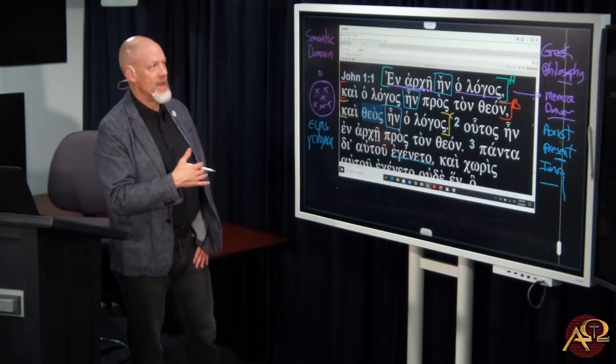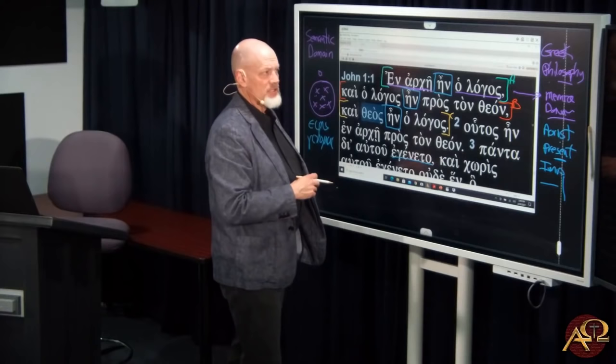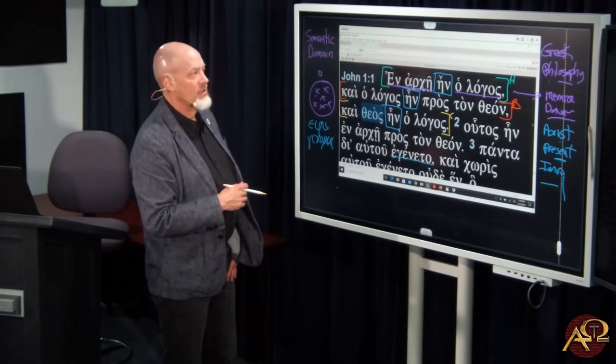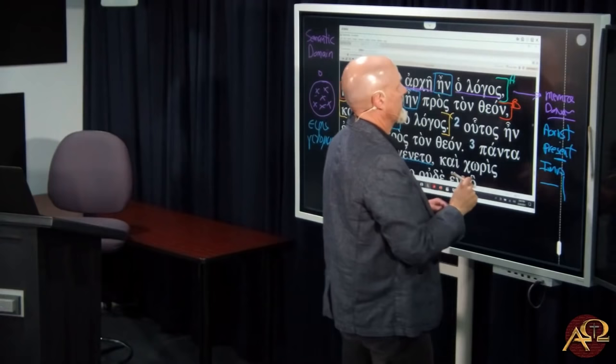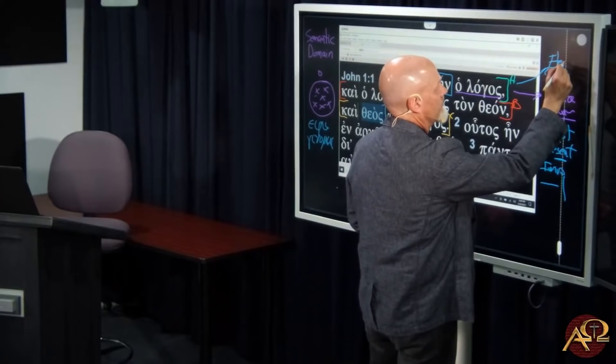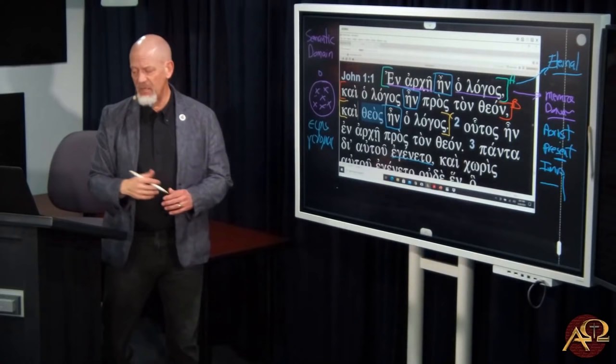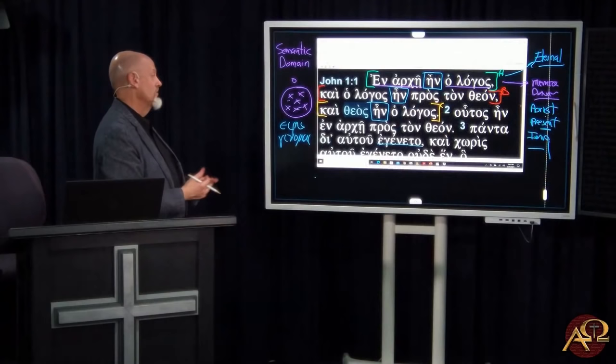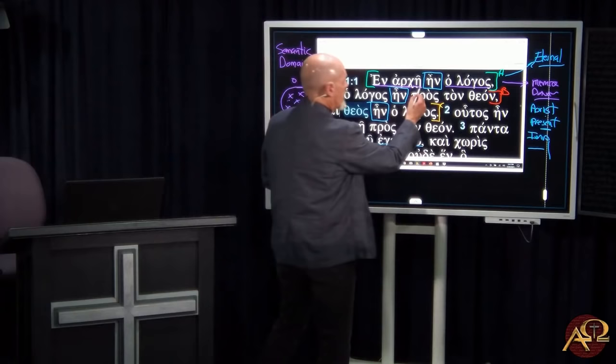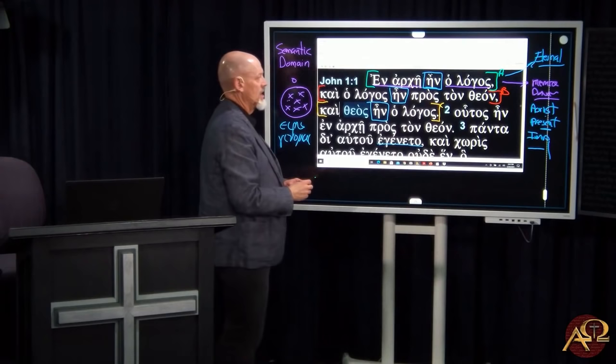As far back as you want to push this, however you interpret archē, the Logos is in existence. So what does this tell us? What does the first clause tell us about the Logos? The Logos is eternal. The Logos is not a created being. The Logos has not come into existence at a point in time. The Logos has existence. We haven't defined it yet, but the Logos was already in existence in the beginning. The Logos is eternal.